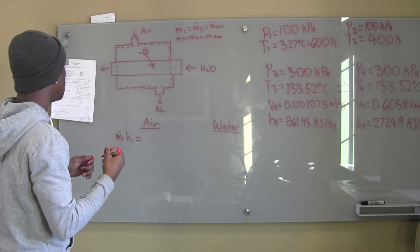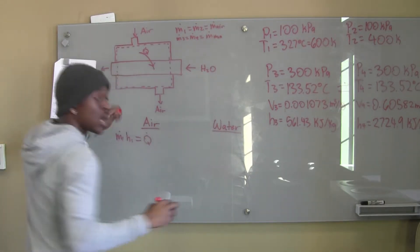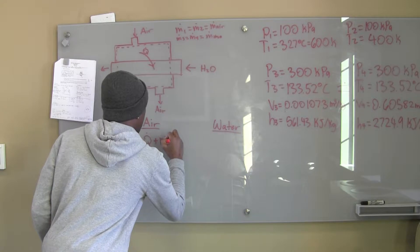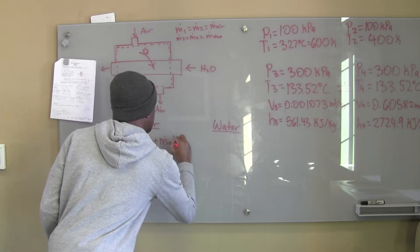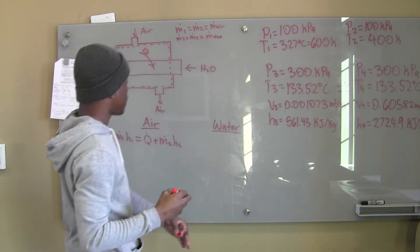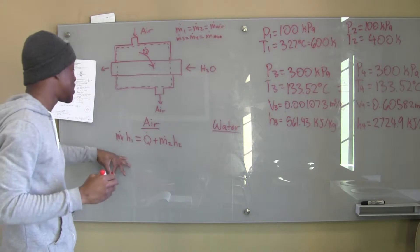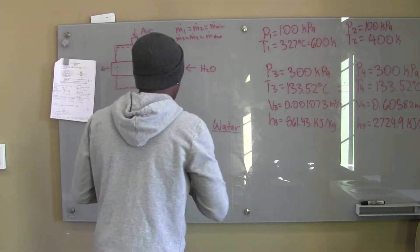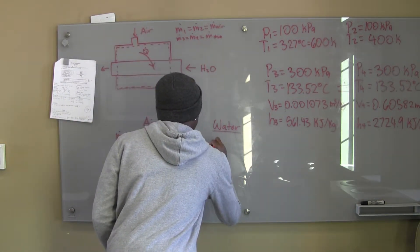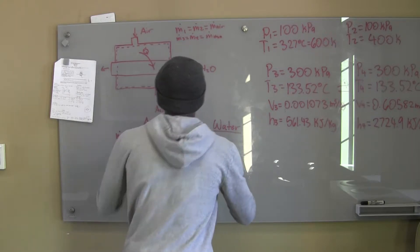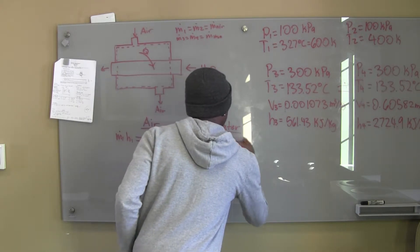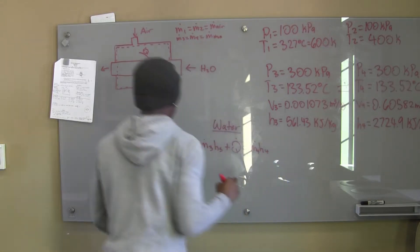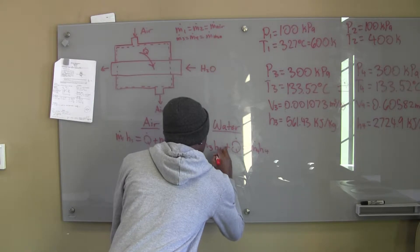Looking at the air side: going in we have ṁ_air·h1, and going out we have Q plus ṁ2·h2, where state 2 denotes the air leaving and state 1 the air coming in. For water: going in we have ṁ3·h3, plus Q coming in to the water, equal to ṁ4·h4. Now we go ahead and solve for Q using these heat exchanger energy balances.